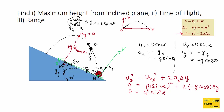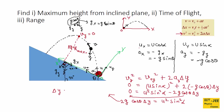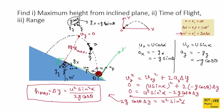Solving for Δy: 2g cos theta · Δy = u² sin²alpha, so Δy = u² sin²alpha / (2g cos theta). This is the formula for maximum height on an inclined plane. However, it is recommended to always use the kinematic equation directly rather than memorizing this formula, since kinematic equations apply to all kinds of projectile motions.